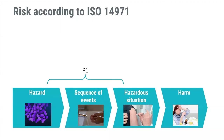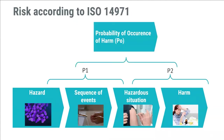In our example, P1 is the probability that someone forgets to wash their hands or doesn't do it well enough. The second part, P2, is the likelihood of harm occurring from a hazard situation — for example, the probability that bacteria makes its way from the hands through a needle stick and causes an infection. Combined, P1 and P2 give you the probability of occurrence of harm, PO.